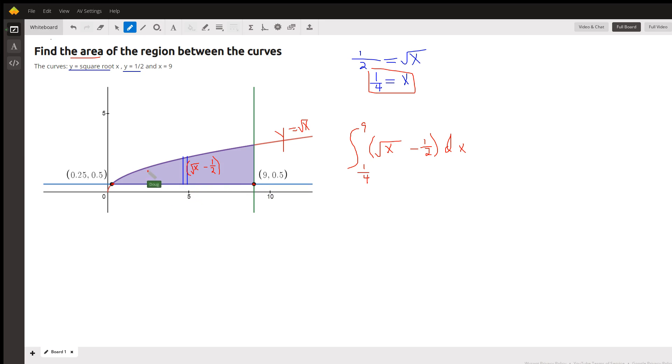If you envision a typical rectangle, we're going to sum up the areas of all those rectangles using a definite integral. The height of a typical rectangle is the y-coordinate at the top, which is the square root of x. For every x between one-fourth and nine, that height is square root of x. If I take away the y-coordinate at the bottom, I'll have the height of the rectangle. The width is represented by dx. So there's the definite integral that represents the area of that region.